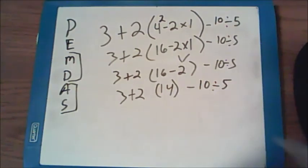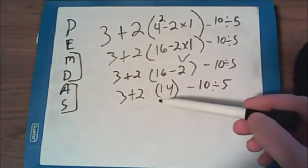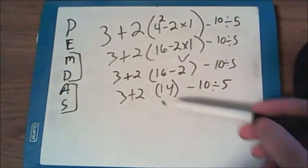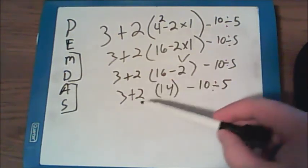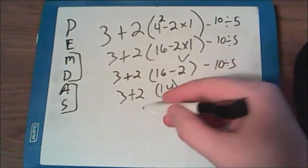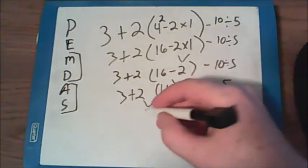Now don't forget that if you have a number next to a parentheses with nothing in between them, that means the number inside the parentheses is being multiplied times the number on the outside. So here I have a multiplication step. I need to do that next. 2 times 14 is 28.